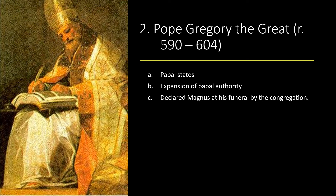Gregory sent Augustine — not Saint Augustine, a different Augustine — to Britain on a missionary mission in 596. He wrote Dialogues, a collection of religious stories and miracles, and Pastoral Care on how to care for new converts. He viewed all of Europe as his responsibility. We're starting to see popes equating themselves with former emperors — a churchly kingdom ruled by a pope. He would be declared Magnus by the congregation at his funeral.